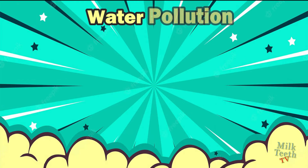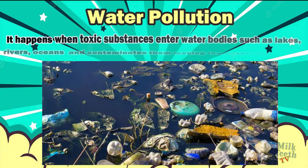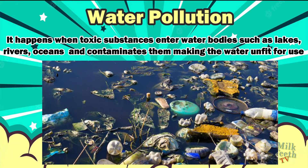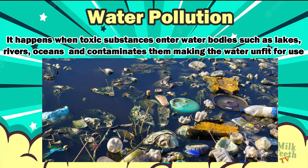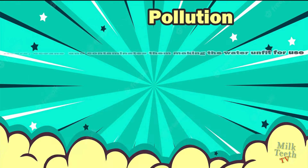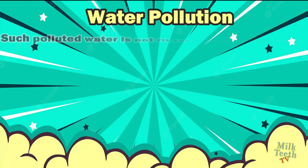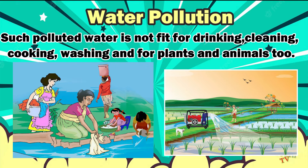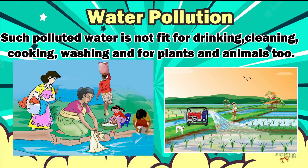Water Pollution: It happens when toxic substances enter water bodies such as lakes, rivers, and oceans, contaminating them and making the water unfit for use. Such polluted water is not fit for drinking, cleaning, cooking, or washing, and is also harmful for plants and animals.